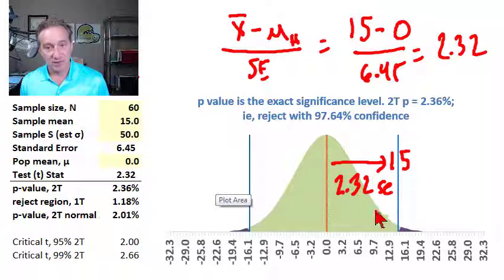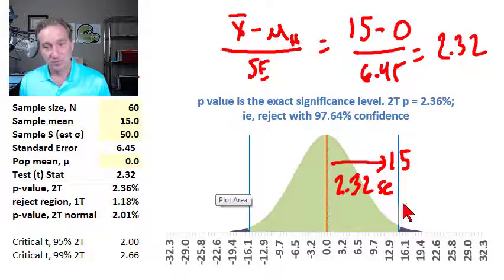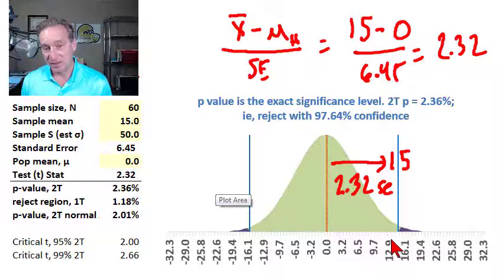That's how far away our 15 is from the null hypothesized value. And then the p-value comes into play because it's giving us the area of the rejection region. In this case, where it's a two-sided p-value,